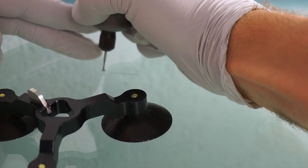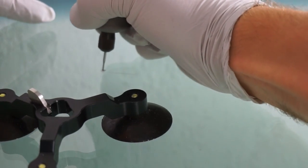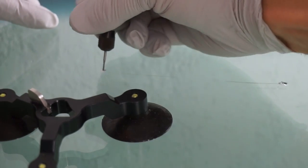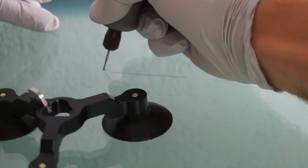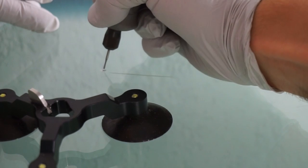Proper drilling technique involves pressing and lifting continuously until you reach about halfway through the first layer of glass. You do not want to go all the way through to the plastic layer in the middle of the windshield.